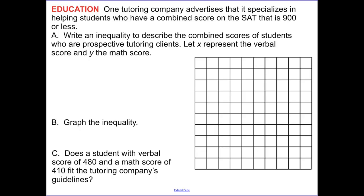Our next example. A tutoring company advertises that it specializes in helping students who have a combined score on the SAT that is 900 or less. So write an inequality to describe the combined scores of students who are prospective tutoring clients. x is going to represent our verbal, and y is the math. So our x score plus our y score, these scores have to be less than 900. So solving that for y, we get that equation.